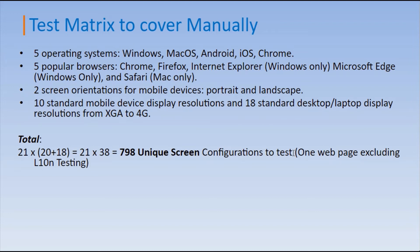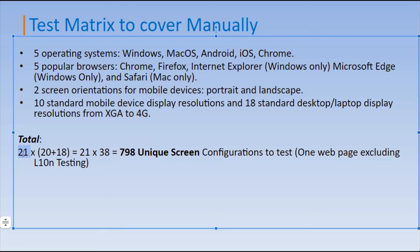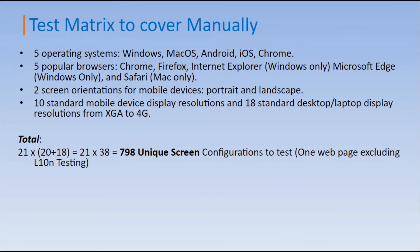If I calculate all the different aspects I've shared: 21 multiplied by 20 multiplied by 18 equals 798 unique screens you have to test. This is for just one web page. If you've made one web page and want to cover it manually, you have to test it on 798 unique screens — and I'm excluding localization testing here. You can understand from this how difficult it would be to cover it manually.